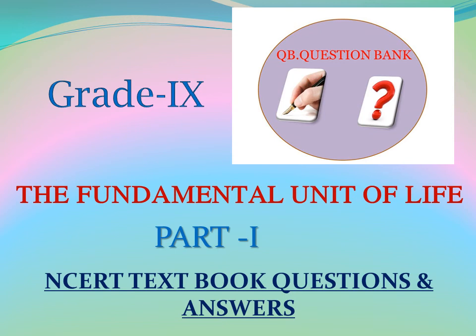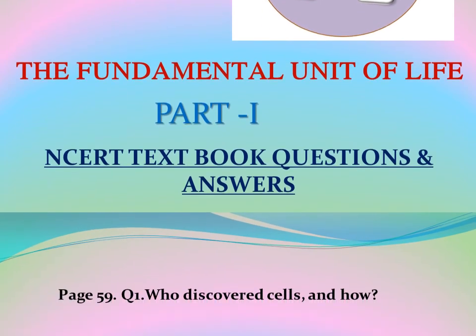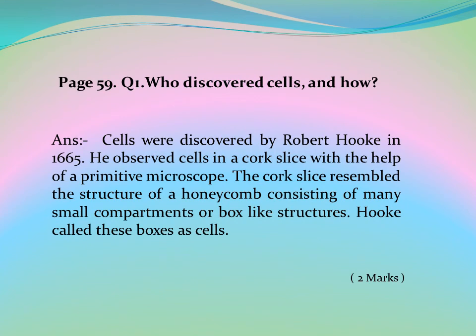Grade 9: The Fundamental Unit of Life Part 1 — NCERT Textbook Questions and Answers. Page 59: Who discovered cells and how? Cells were discovered by Robert Hooke in 1665. He observed cells in a cork slice with the help of a primitive microscope. The cork slice resembled the structure of a honeycomb consisting of many small compartments or box-like structures.